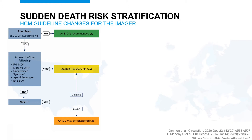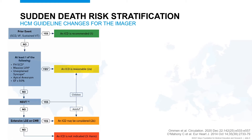If non-sustained ventricular tachycardia is not present, we can look at extensive late gadolinium enhancement on cardiac MRI. If that's present, it could drive us into an ICD may be considered — a class 2B recommendation. Absent all of these criteria, an ICD is not indicated.